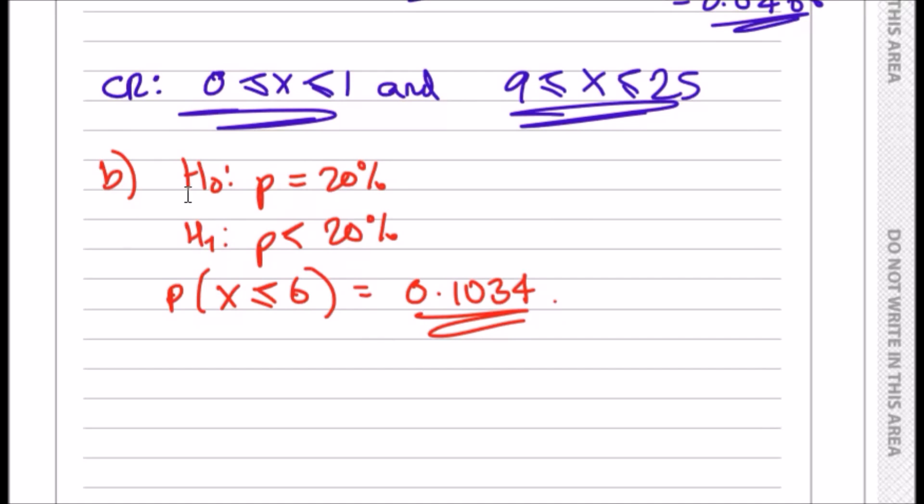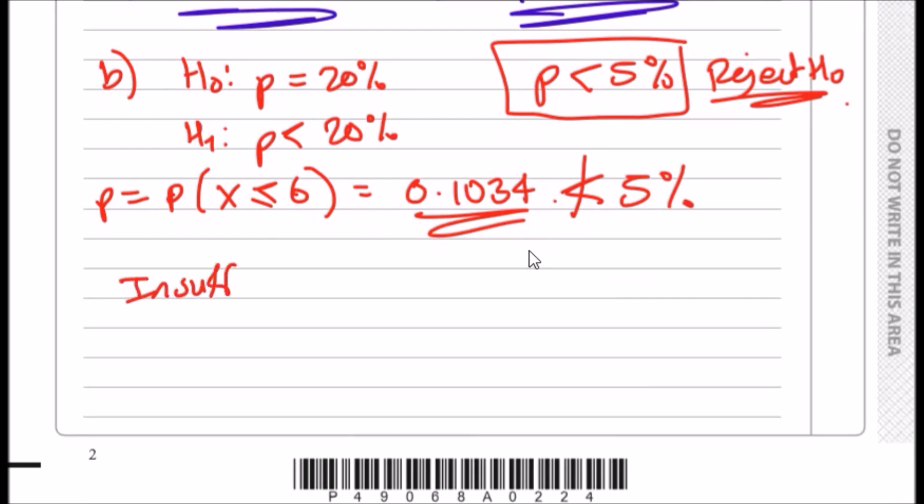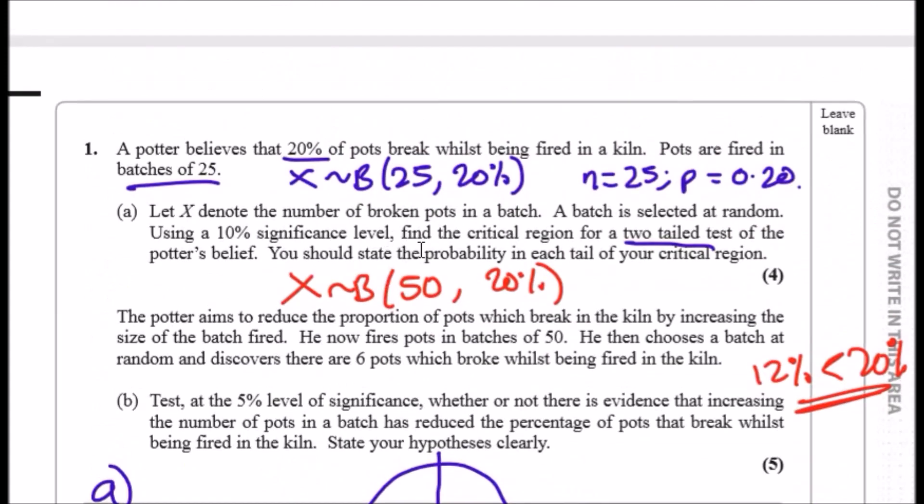Let's write this down: 0.1034. What does this tell us? We only reject the null hypothesis if the p-value, the probability, is less than 5%. This is just a general rule of thumb. In this case, this one is not less than 5%, so we can say there is insufficient evidence, or there is not enough evidence to reject the null hypothesis. If we can't reject it, there's insufficient evidence to actually reject it. That means we're going to accept it, so we assume the property remains constant at 20%. We have to agree with the potter's belief.